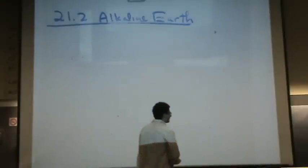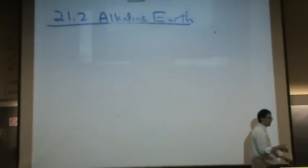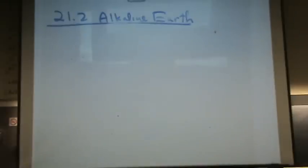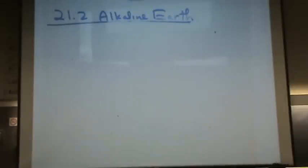Alkaline earth, this is the second column: beryllium, magnesium, calcium, strontium, barium, all the way down. They're very insoluble. They don't decompose very well.